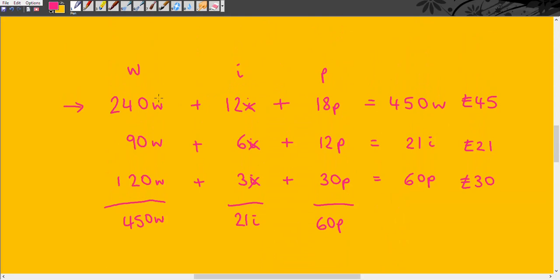So going back here, we're going to say this wheat is also 0.1 each, so it's now going to be 24 pounds. This one's going to be 9 pounds, and this one's going to be 12 pounds.